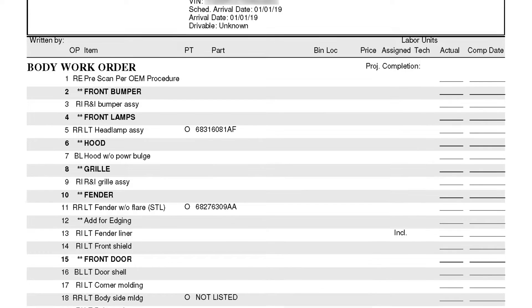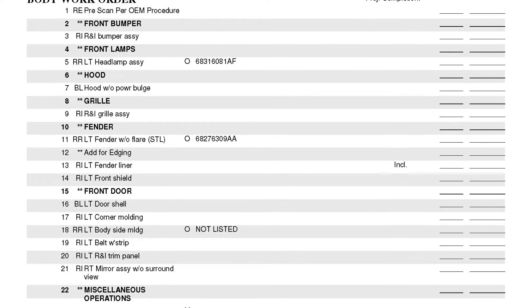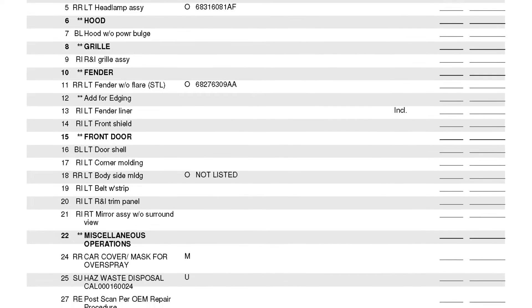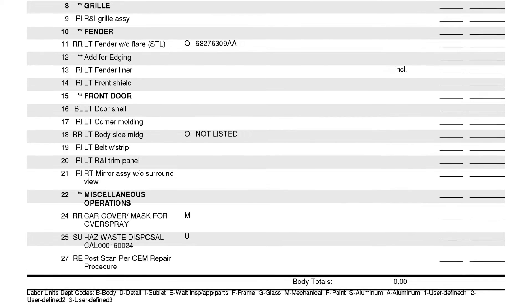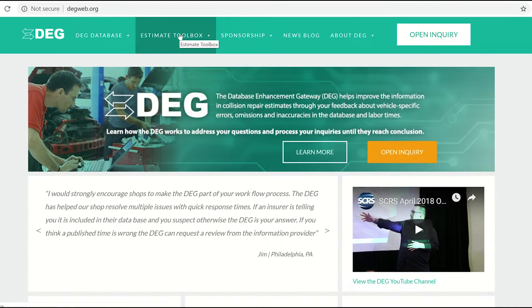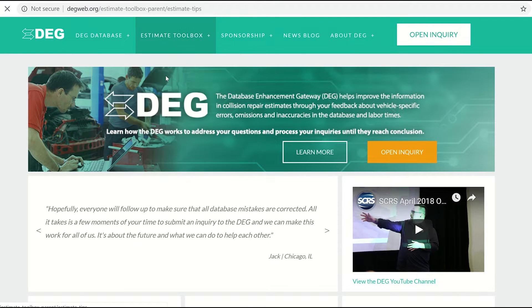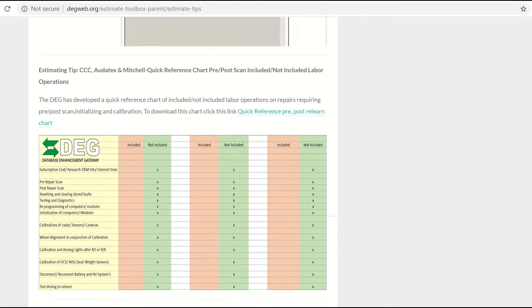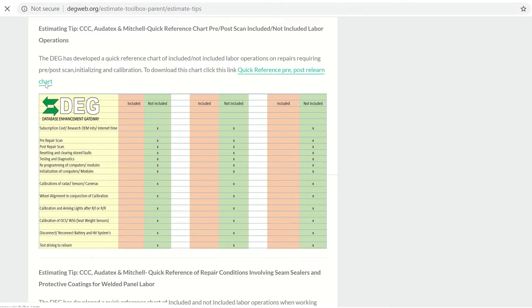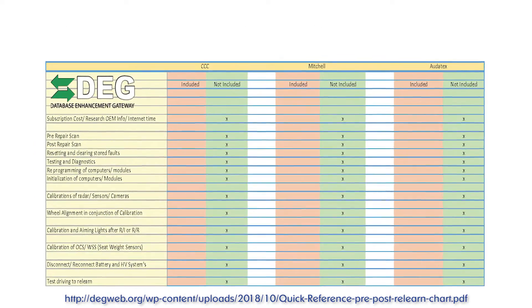A pre-scan can avoid costly estimating errors and ensure the repair plan accounts for all operations that will be required prior to delivery, and alert to any potential more advanced diagnostic or calibration work that may require planning for sublet. Unexpected sublets can result in repair delays and missed delivery commitments to the customer. The Database Enhancement Gateway, or DEG, has developed a quick reference chart of labor operations or repairs requiring pre- and post-scan initializations and calibrations. To download this chart, visit www.degweb.org.